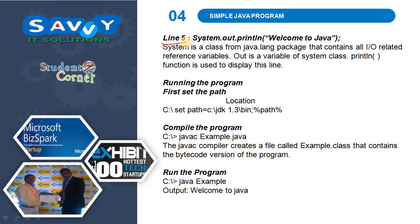To run a Java program, first we need to set the path, then compile the program, then run the program. For compilation: javac programname.java. For running: java programname. In the next video we will explain how to set the path and how to run a sample Java program. Thank you.